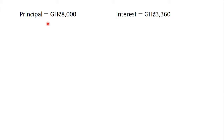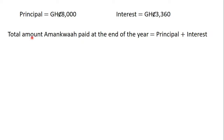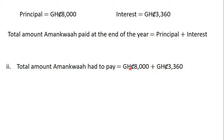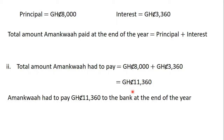The principal, or the loan Amankwa took from the bank, was 8000 Ghana cedis, and the interest on the loan is 3360 Ghana cedis. The total amount of money Amankwa paid at the end of the year is equal to the principal plus the interest on the loan. The principal is 8000 Ghana cedis and the interest is 3360 Ghana cedis. Adding these two gives 11,360 Ghana cedis. So Amankwa had to pay 11,360 Ghana cedis to the bank at the end of the year.